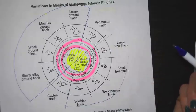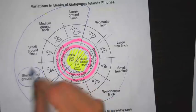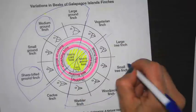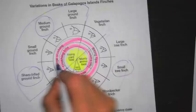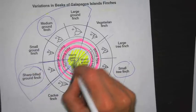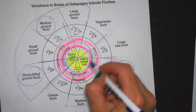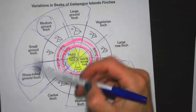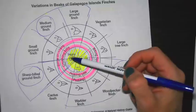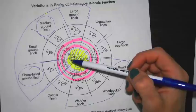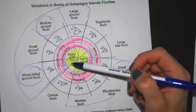For example, if the sharp-billed ground finch came to an island where a medium ground finch and a small tree finch already lived, the sharp-billed ground finch eats mainly plant food, and so does the medium ground finch — so those two would compete. They eat the same food and occupy the same niche. The better adapted one survives and reproduces; the other could go extinct. The small tree finch, eating animal food, would be relatively unaffected.